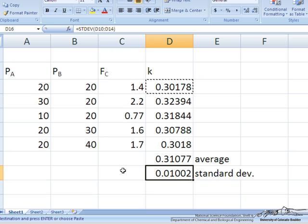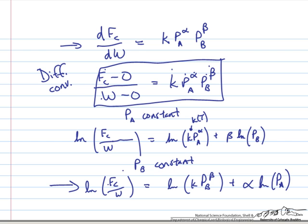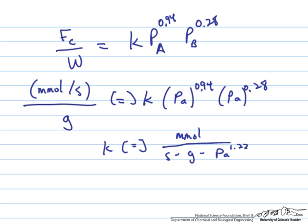Okay, now the final question is of course that k has units. And so what units will we report for k? I'm going to jump over here again. And recall that we're using this expression. I'm going to go to the next page. So here I've just rewritten out that expression with alpha and beta plugged in now. Values of 0.94 and 0.28.